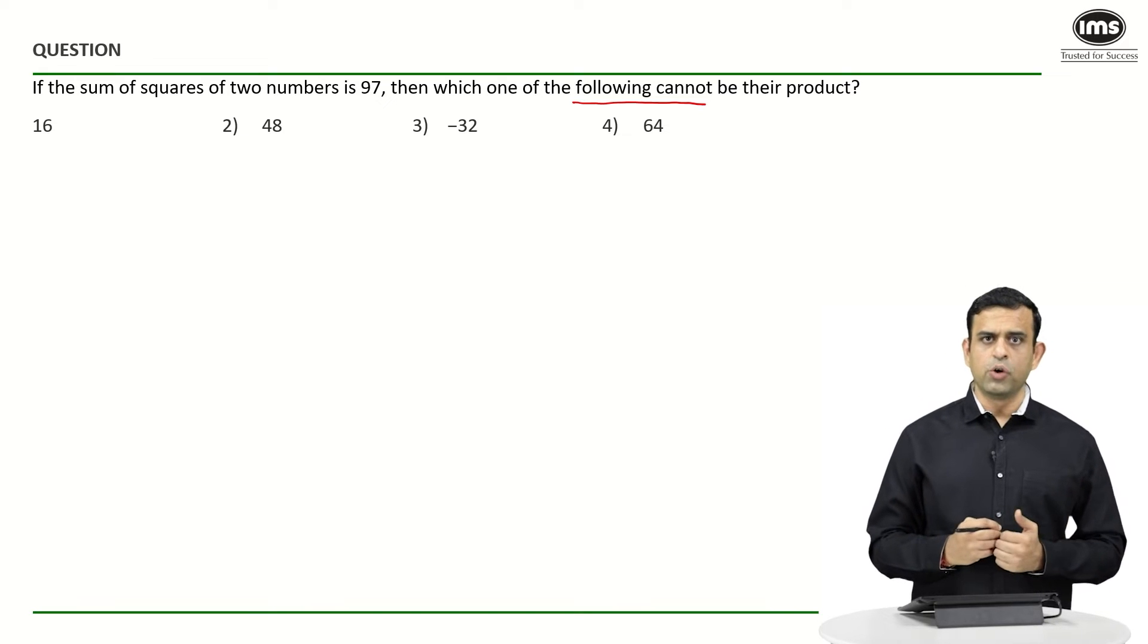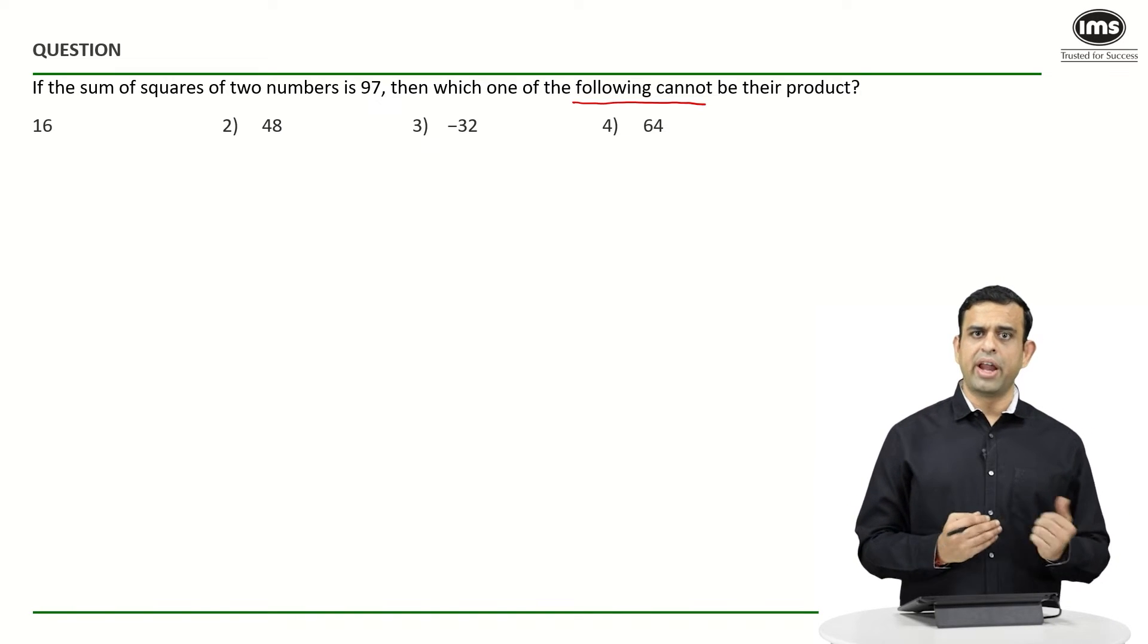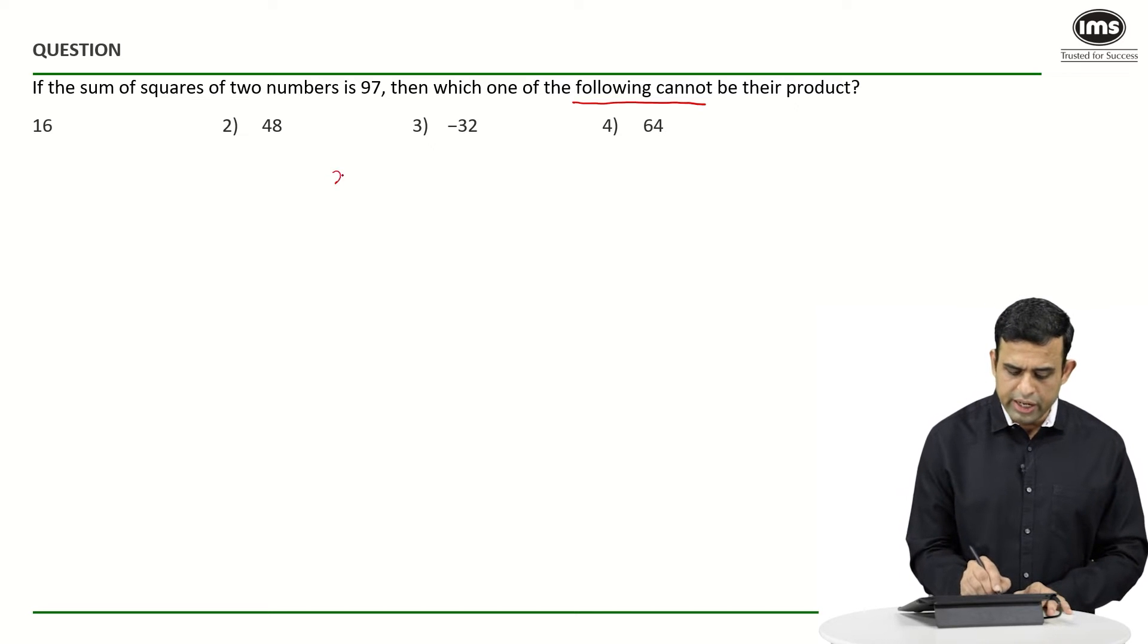What is given to me is, if I assume the numbers to be x and y, one can say from the first part that x² + y² is given to you as 97, and we want to basically comment on which of the following cannot be the product.